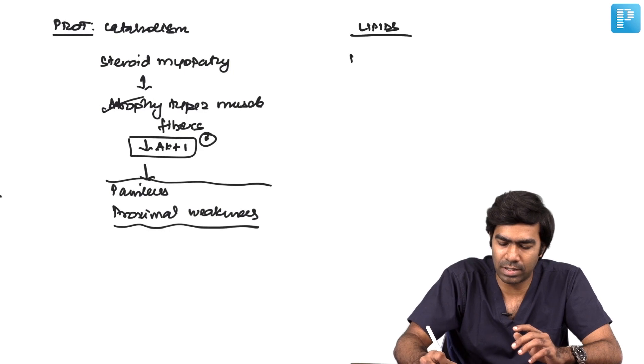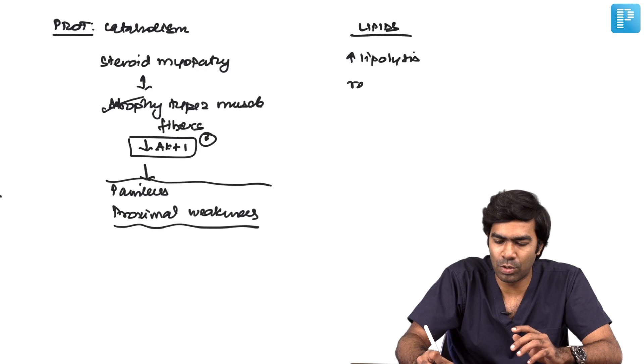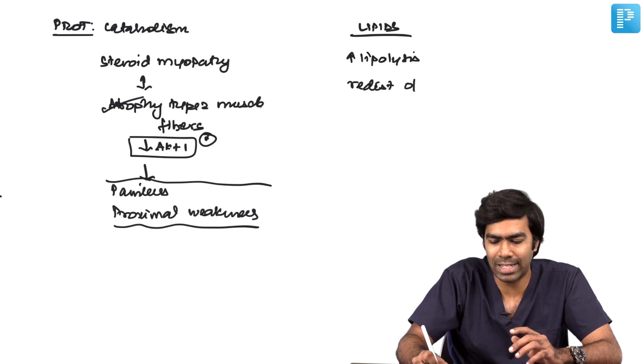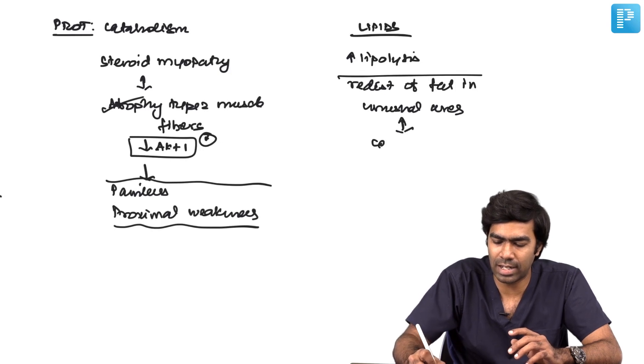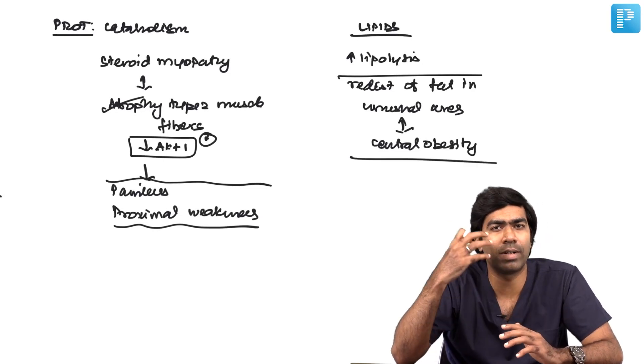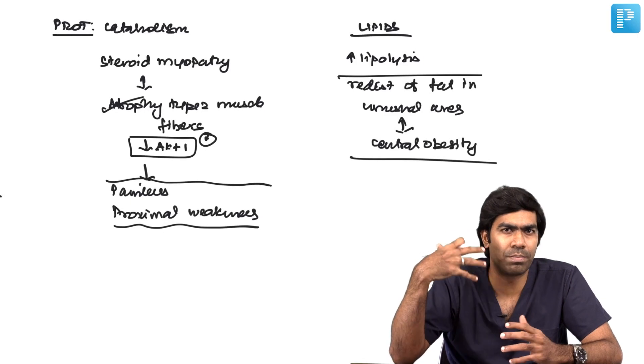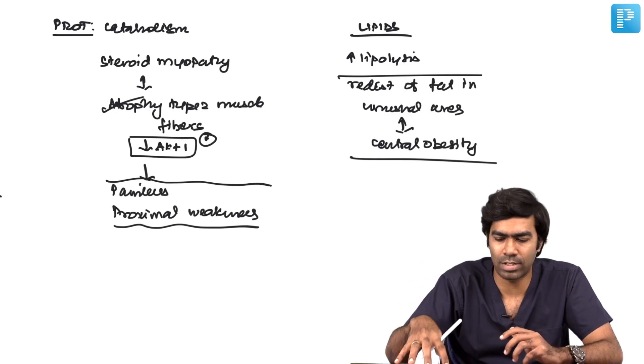They can affect lipids. They will increase lipolysis and produce redistribution of this lysed fat in unusual areas - mostly in central areas resulting in central obesity. That is the reason you develop Cushingoid facies like moon face, buffalo hump, and central obesity.